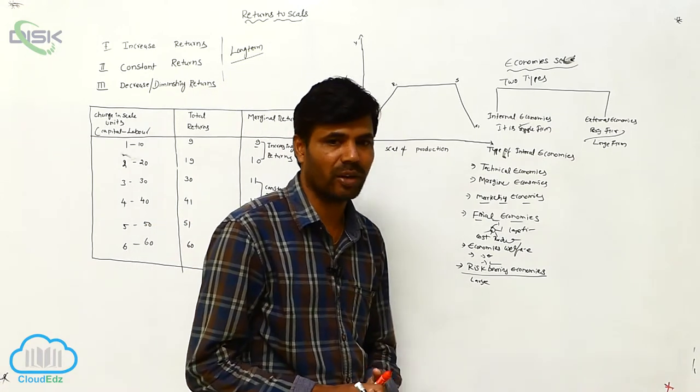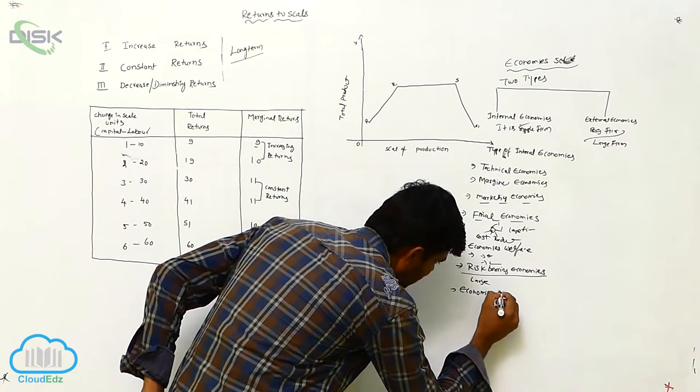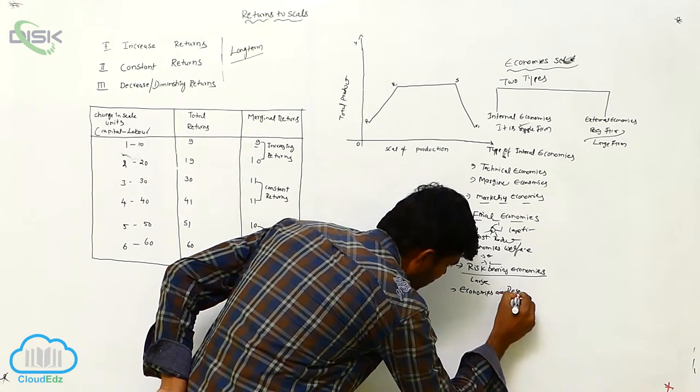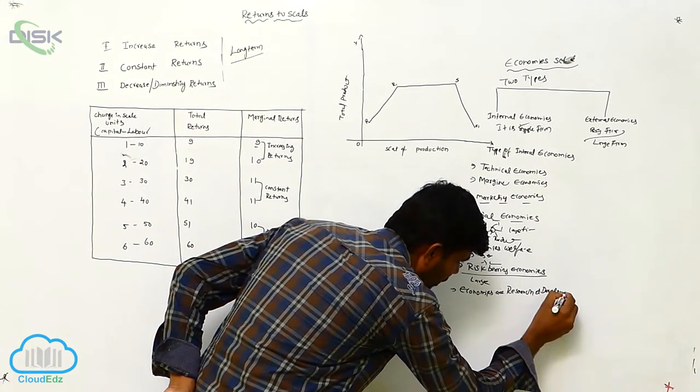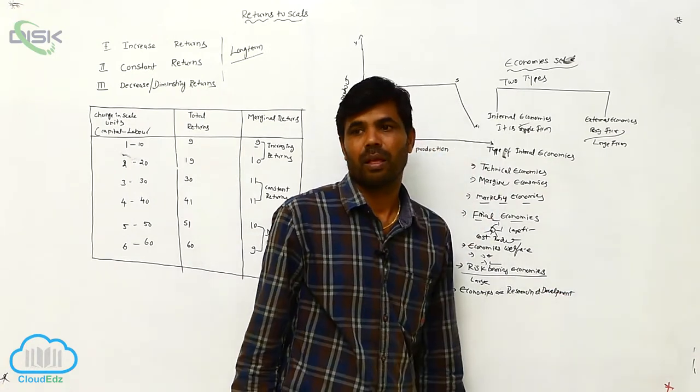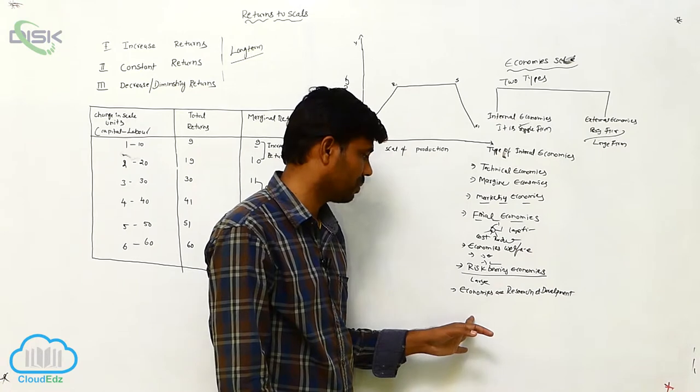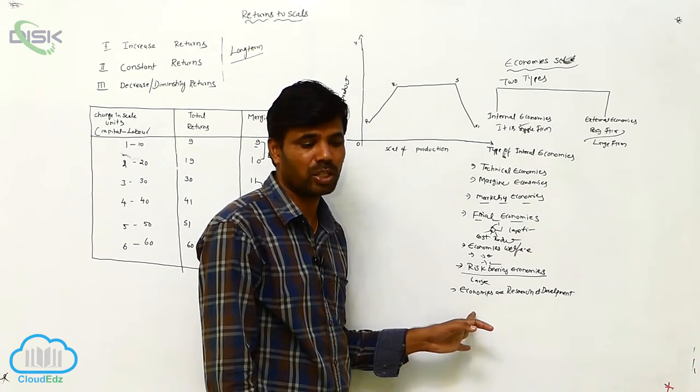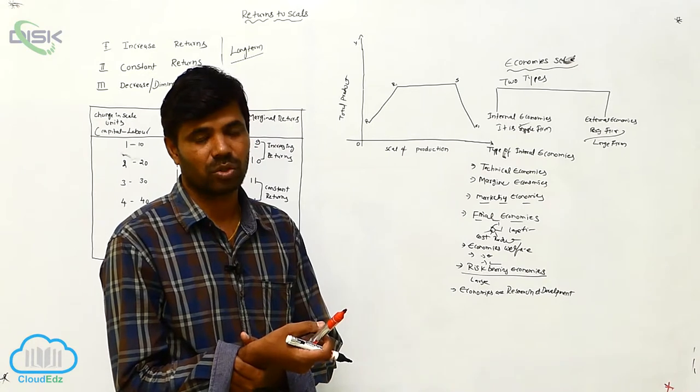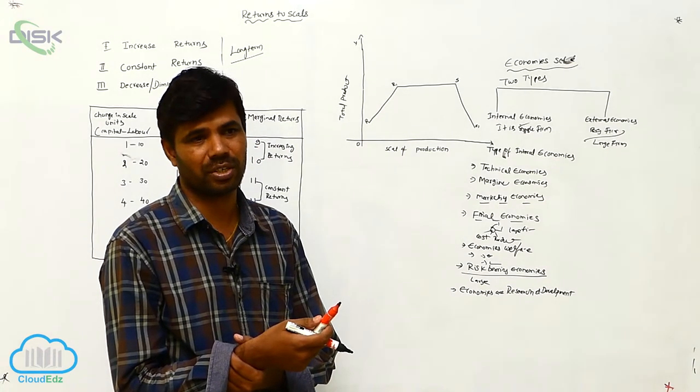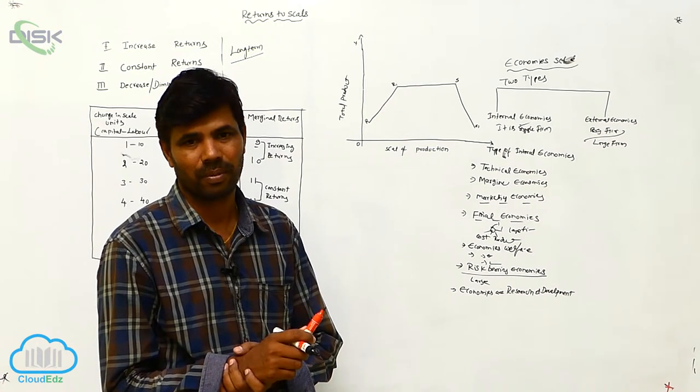Next is economies of research and development. It is the last thing in economics point of view. It is possible to the large scale, it is not possible to the single firm. Because so many research, if you are doing research, we need some elements, we want something, either capital, or manpower, or machinery, or materials, so many things we need it.